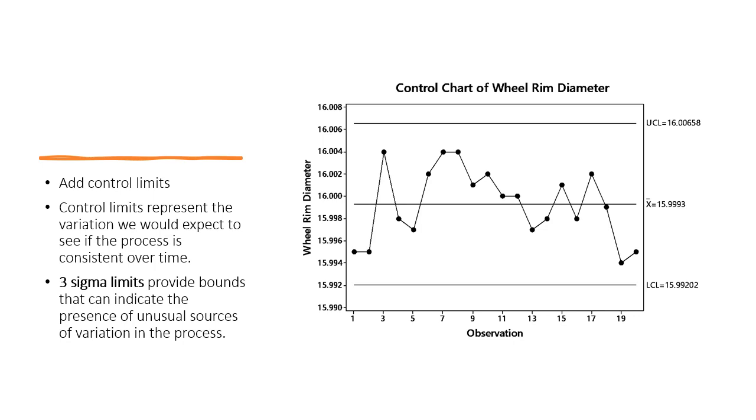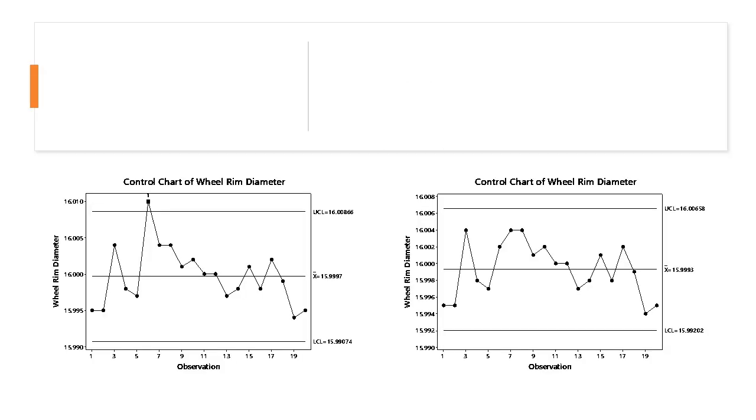When points fall outside this range, it indicates that there is excessive variation in the process. Before we use a control chart to assess the stability of the wheel manufacturing process, we need to know what it means for a process to be in or out of control. So what exactly is the difference between in-control and out-of-control processes?